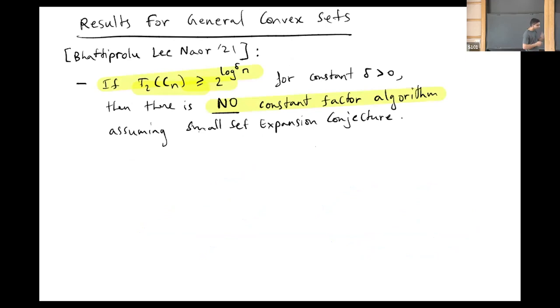Given this, we show that having bounded type-2 is a necessary condition for having constant factor approximability. Specifically, we show that if type-2 grows very quickly, so 2 to the log to the delta N for any constant delta, if it grows very quickly, then there is no constant factor approximation algorithm for bilinear maximization over CN, assuming another commonly used complexity conjecture called the small set expansion conjecture. So having bounded type-2 or very slow growing type-2 is a necessary condition.